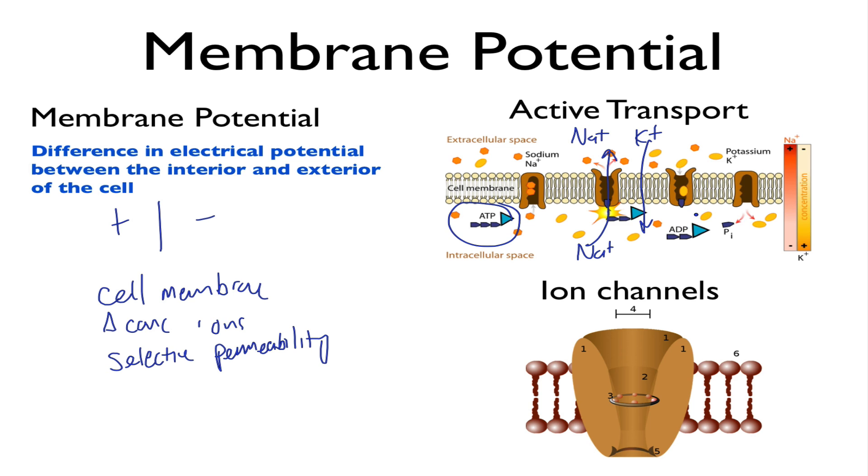Now, selective permeability comes from ion channels, which are a class of membrane-spanning proteins that form conduits between the interior and exterior of the cell, allowing ions to move freely. So, ion channels are selective, and they only allow certain ions to pass.